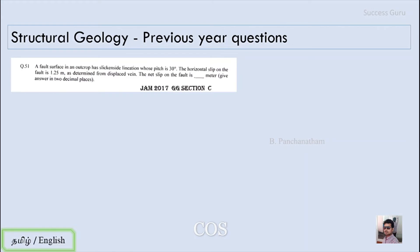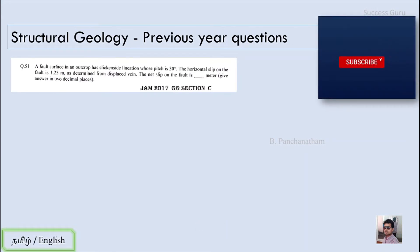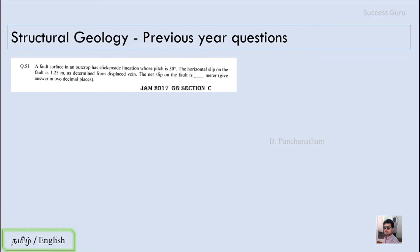The next question is from JAM 2017, Section C, question number 51. A fault surface in an outcrop has a slickenside lineation whose pitch is 30 degrees. The horizontal slip of the fault is 1.25 meters. From the displacement plane, the net slip of the fault is asked in meters. This is also an oblique fault where the pitch and horizontal slip are given and the net slip must be found.